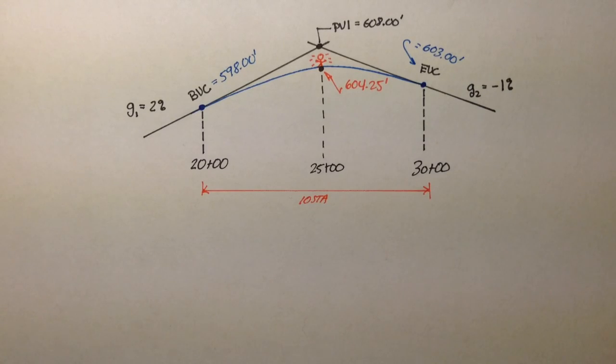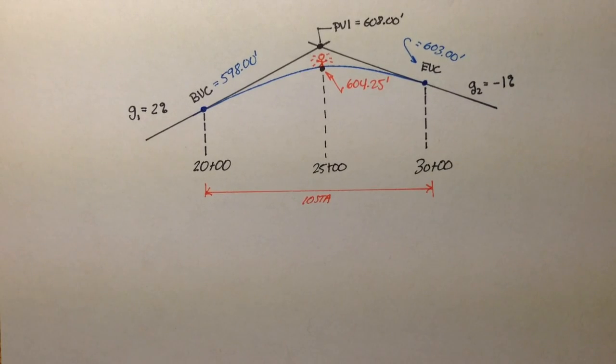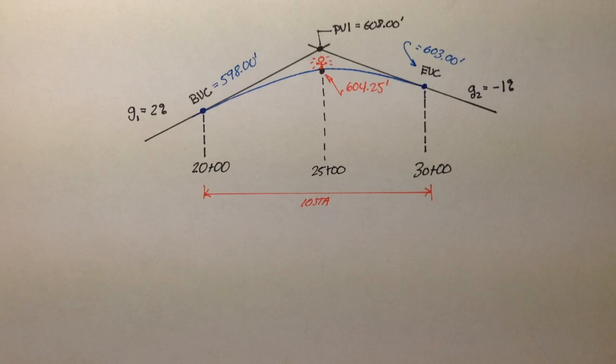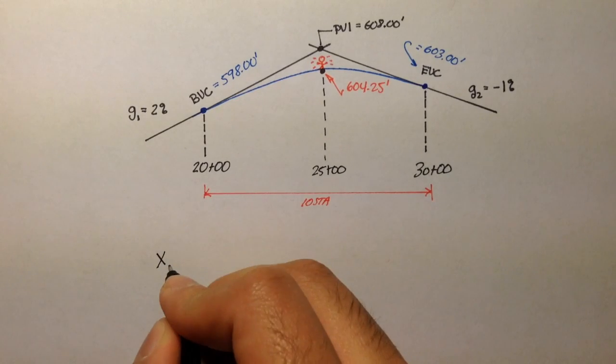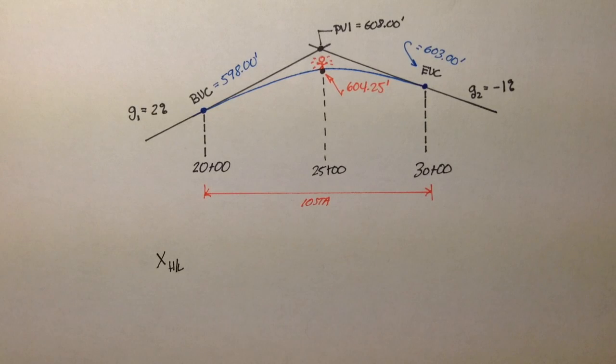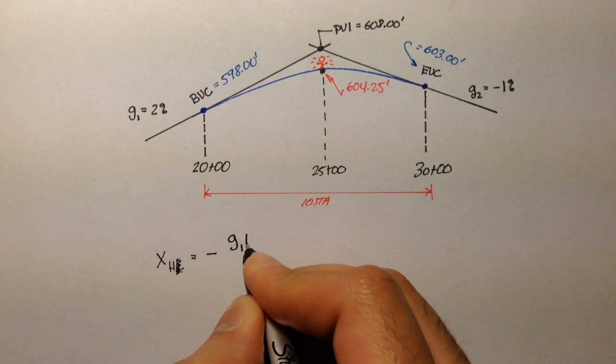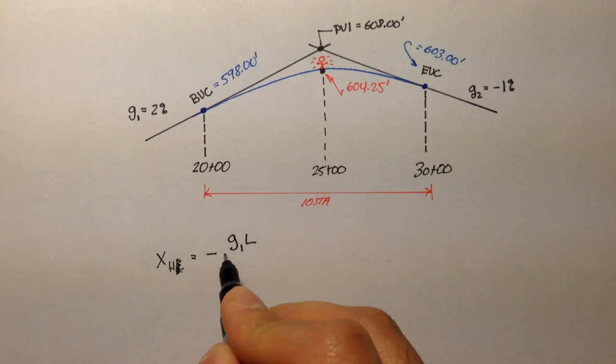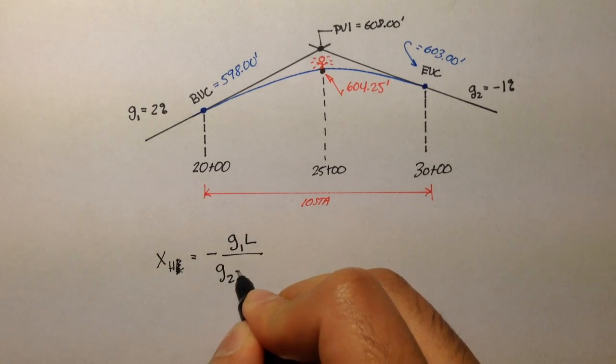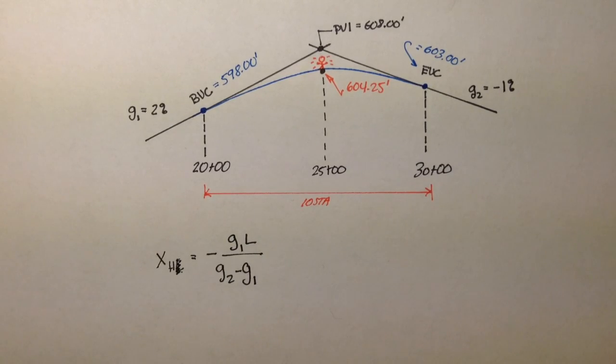And if you remember from the last several videos where we talked about finding the high-low points, we had an equation to find just that. That equation was x high or low. In this case, the subscript h and l mean high and low. Since this is a crest curve, we should only worry about the high point. So xh is equal to negative g1, the entering grade, times the length of the curve over the difference between the two grades, g2 minus g1.